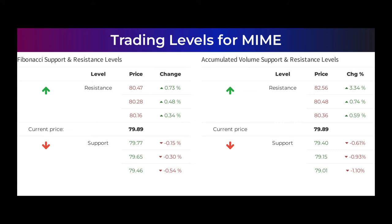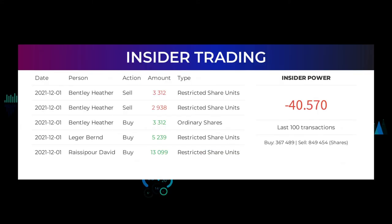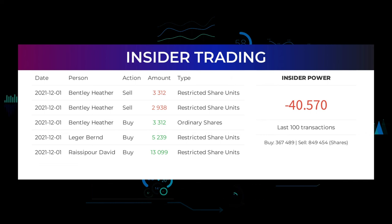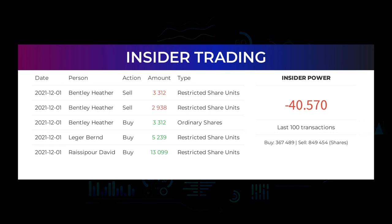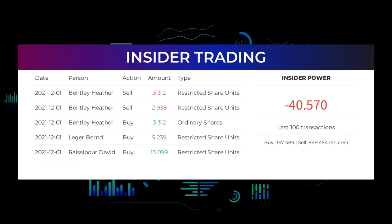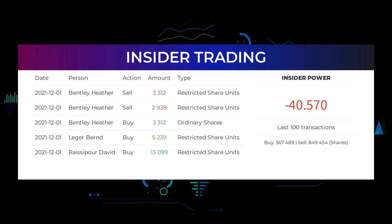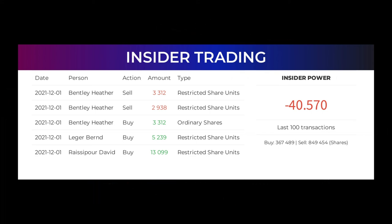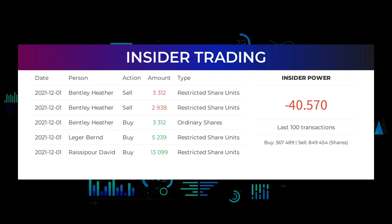The average rating combined from several analyst sources for Mimecast Limited is strong buy. Here are some of the latest insider trades. On December 1, 2021, Bentley Heather made an inside sell of 3,312 restricted share units, and also an inside sell of 2,938 restricted share units, as well as an inside buy of 3,312 ordinary shares. Ledger Bernd made an inside buy of 5,239 restricted share units, and Raisipur David made an inside buy of 13,099 restricted share units. Based on the 100 latest insider trades, the insider power is calculated as negative at a ratio of minus 40.570. In total, insiders bought 367,489 and sold 849,454 shares in the last 100 trades.